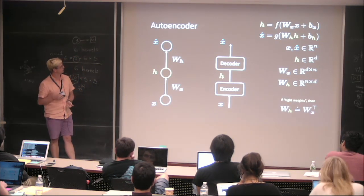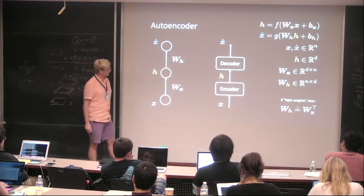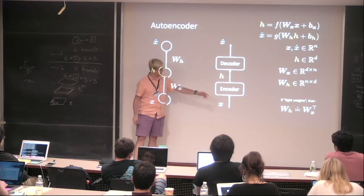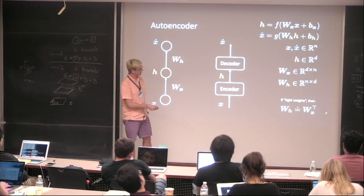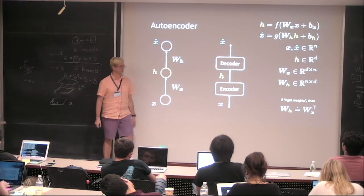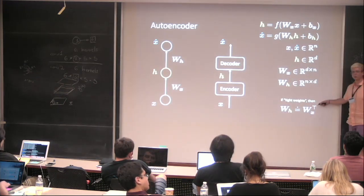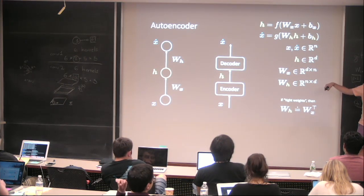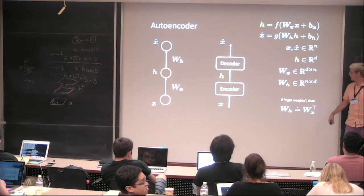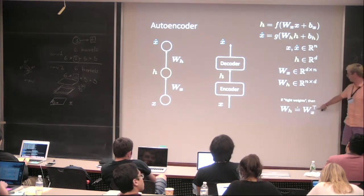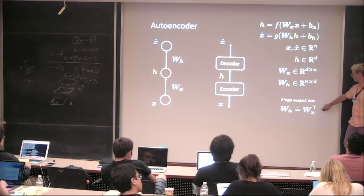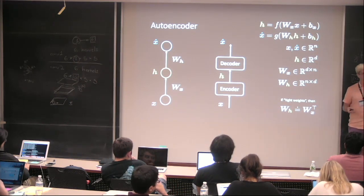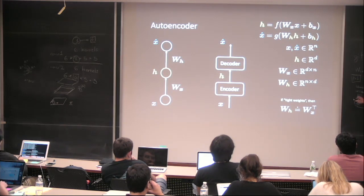The first part is called the encoder and the second part is the decoder. Sometimes the weights are tied — the encoder weights are equal to the decoder weights transposed, because you have an N×D matrix and a D×N matrix. Using tied weights reduces the number of parameters, making optimization easier.